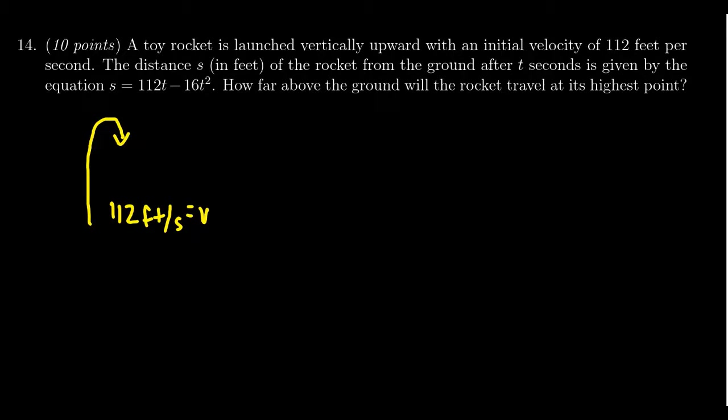So this is our initial velocity. We'll put a V₀, so at time 0 its velocity was such. The distance S, which we're measuring in feet of the rocket after t seconds, is given by the following equation. So honestly, we're just given, or handed, our quadratic equation.